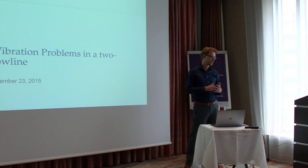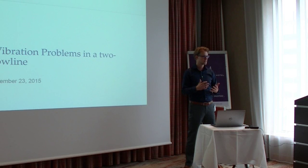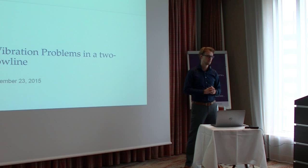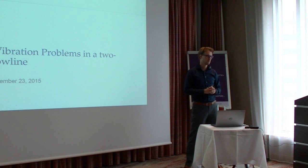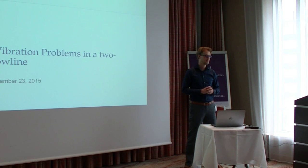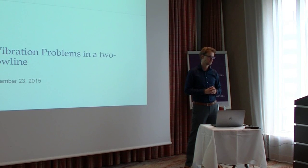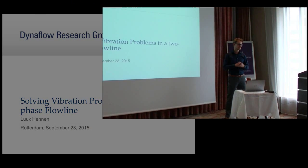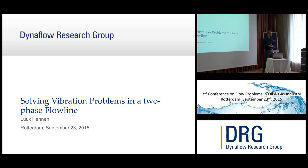And second, what can we do about it. The second situation is that there was a failure in a line in which two-phase flow took place, and they want to know how to make sure it doesn't happen again without having to do too much about the actual process conditions. So the goal for this presentation is to inform you about what type of situations these are, how you can solve them, and how you can approach and tackle the problems.